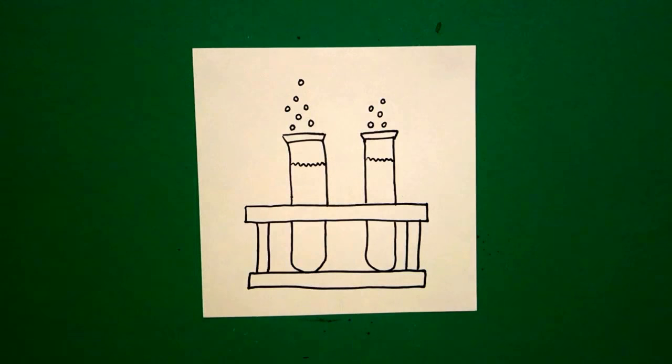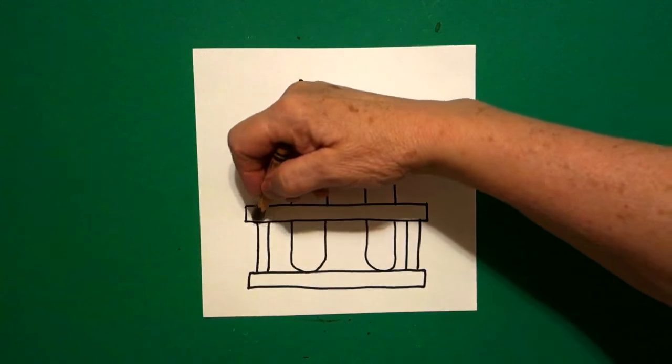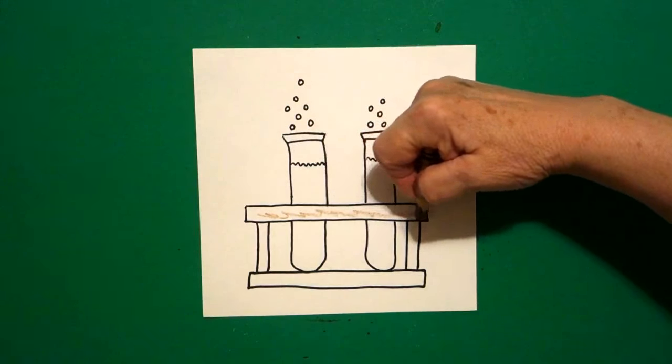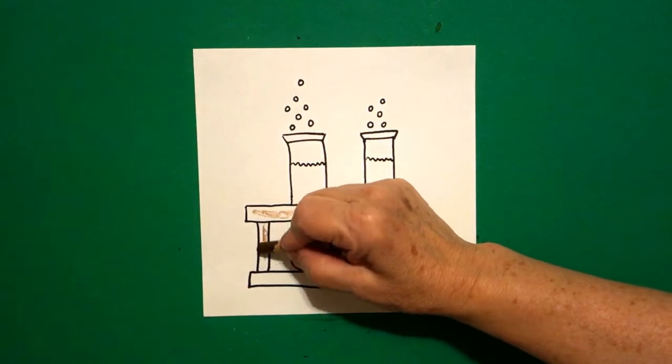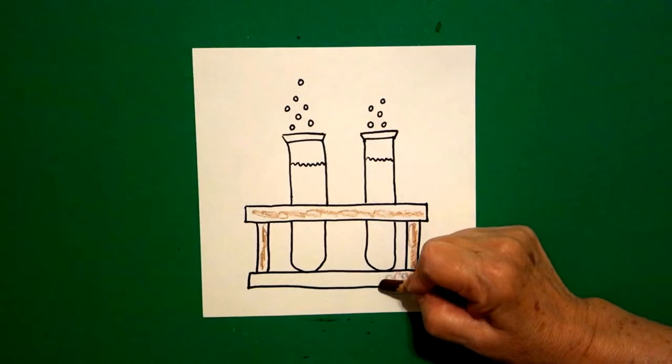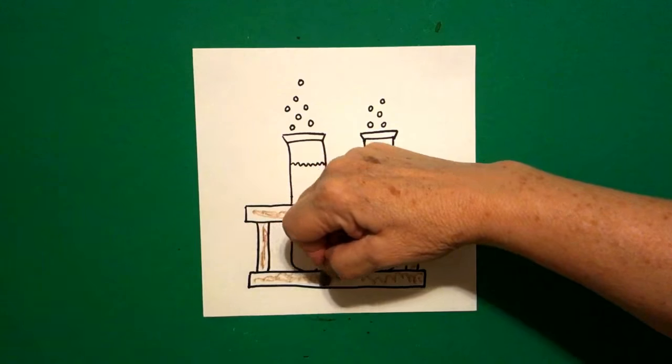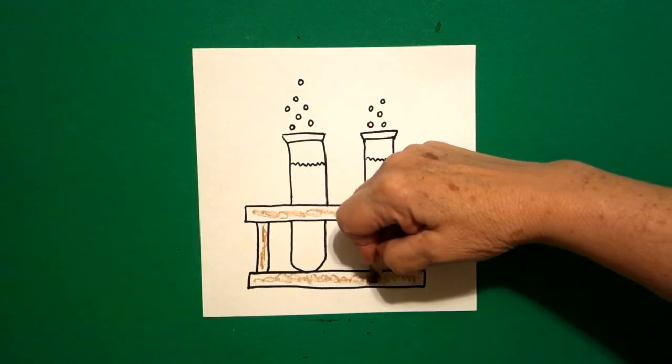Let's see how we're gonna color these in. My test tube holder, which is this contraption right here, all these skinny rectangles, this is all gonna be brown.